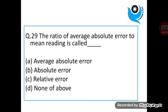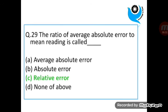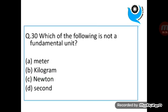Question 29. The ratio of average absolute error to mean reading is called relative error. Question 30. Which of the following is not a fundamental unit? Answer is C, newton. Thank you.